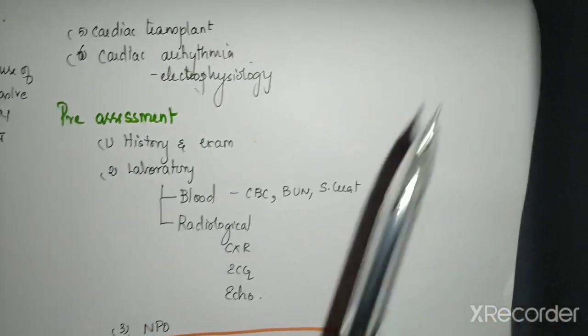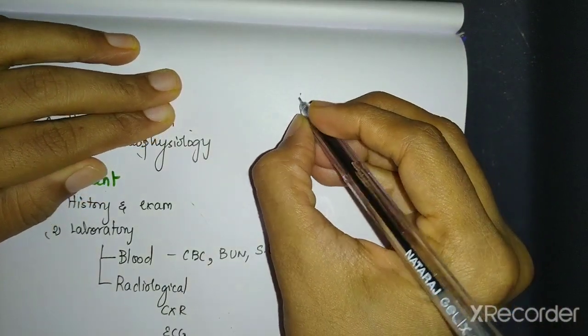Note that this NPO is not just for your cardiac catheterization. This will hold good for any surgery. So this is the guidelines. So 2 hours for clear liquids, 4 hours for breast milk, 6 hours for non-human milk infant formula, 6 to 8 hours for any solid food NPO. So now this child, you have given NPO, this child is coming to you for cardiac catheterization.